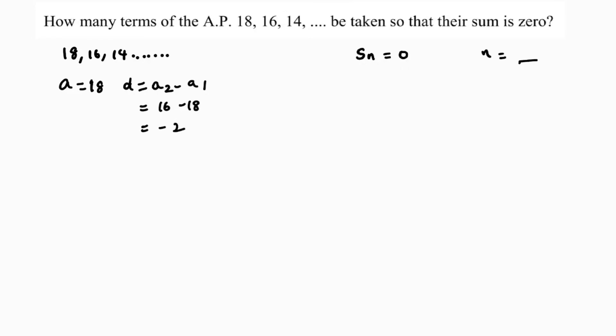Sum of N terms, the formula is N by 2 times 2A plus N minus 1 into D. This is the formula for SN.